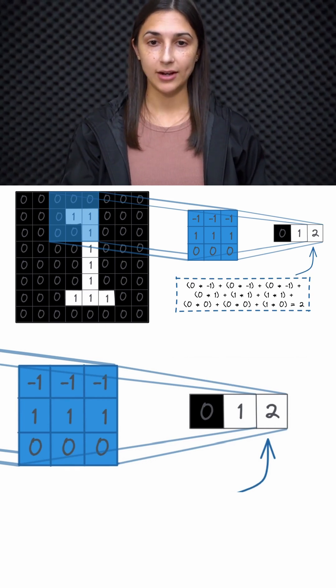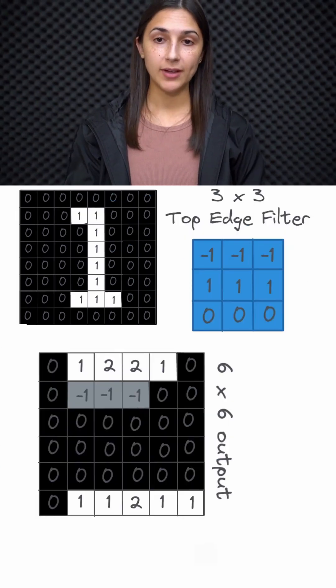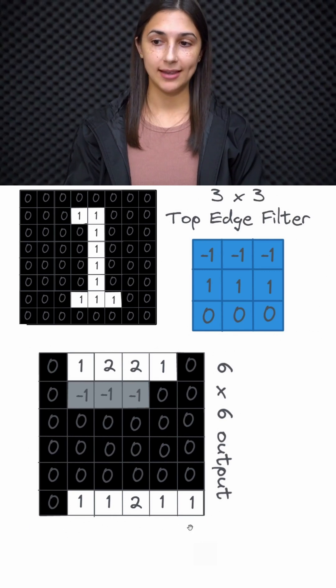We'll now skip ahead to look at the final output from this filter. So by convolving this 8x8 input image with this 3x3 top edge filter, we get this final 6x6 output.